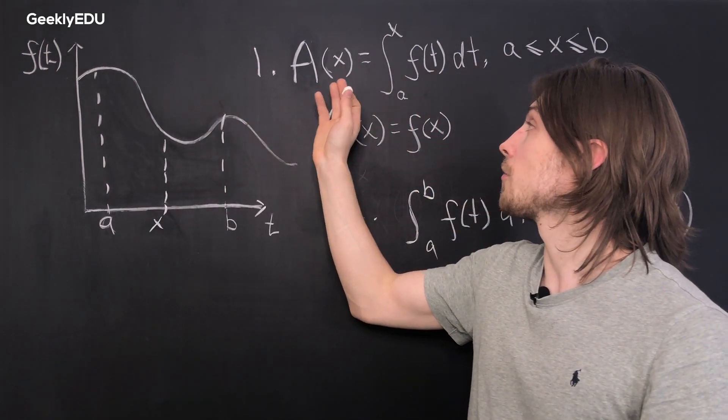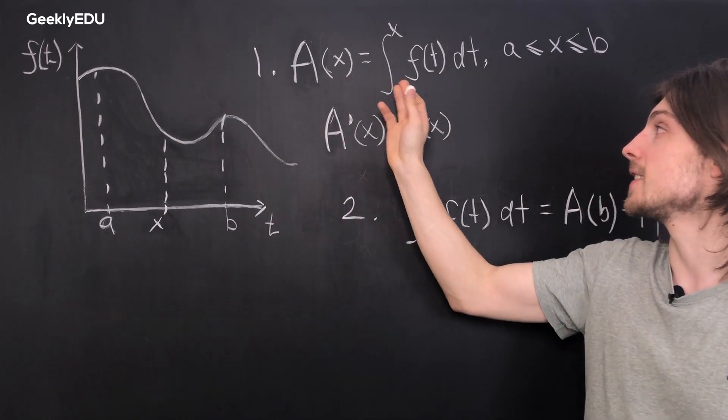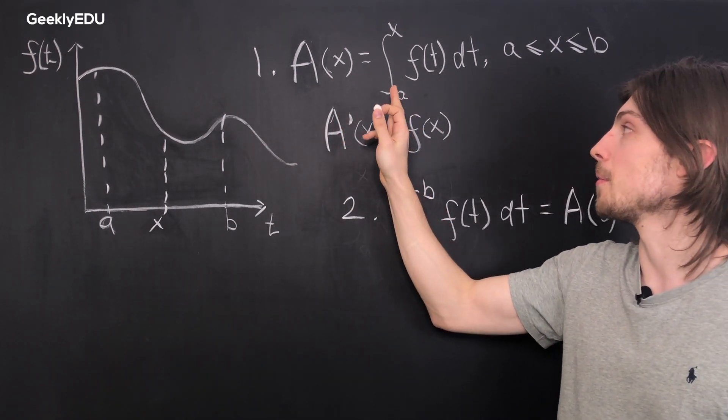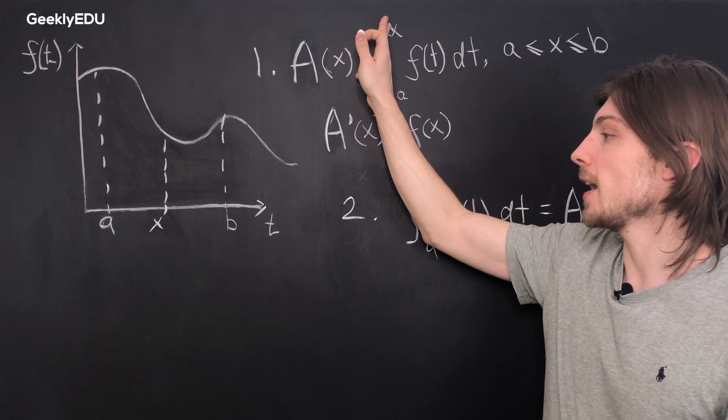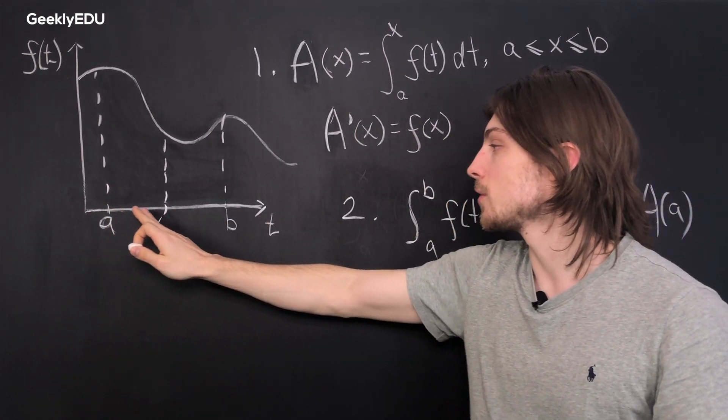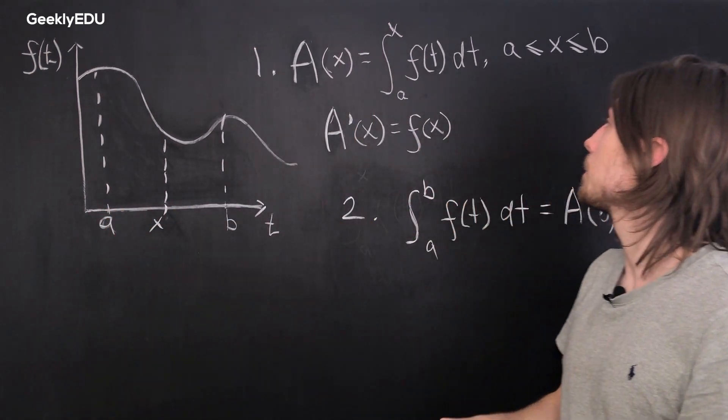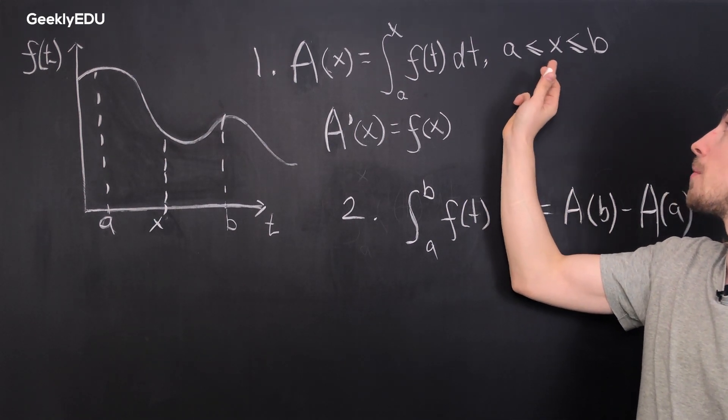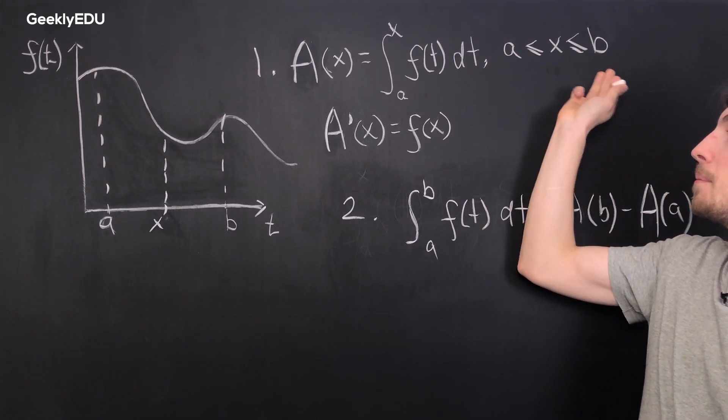Anyway, so our function A of x is a definite integral on an interval from a to point x, so from here to here, and it falls, as we've mentioned before, the point x falls between a and b.